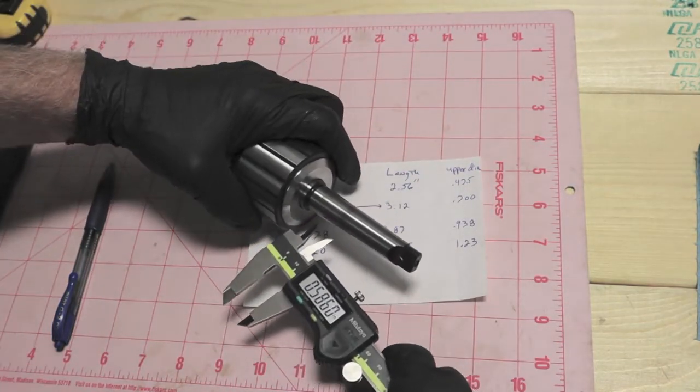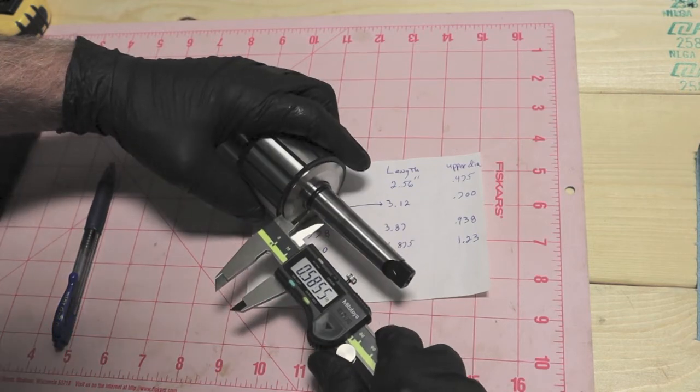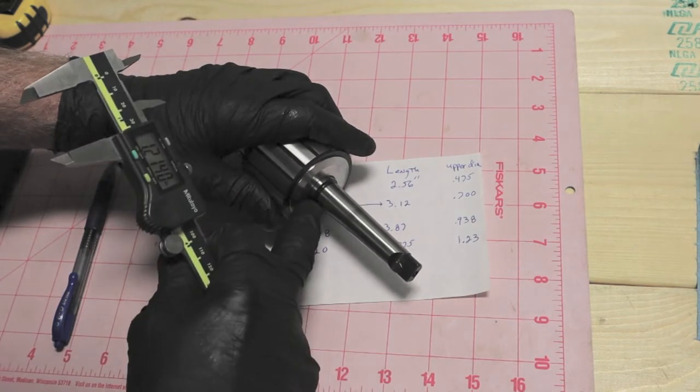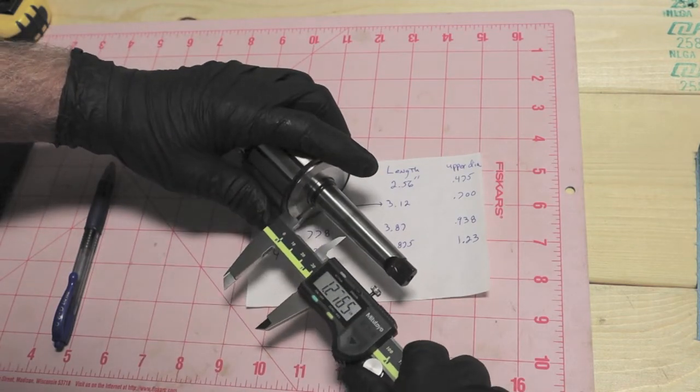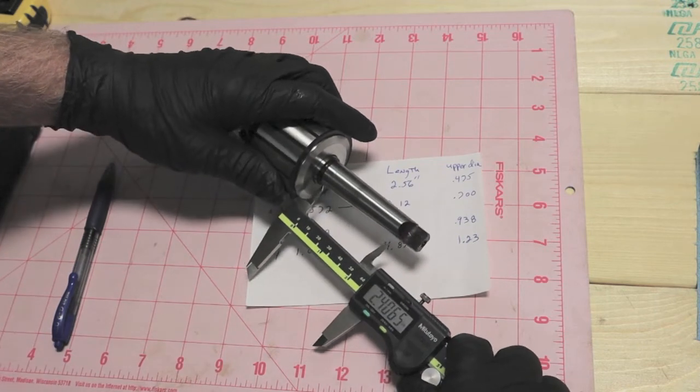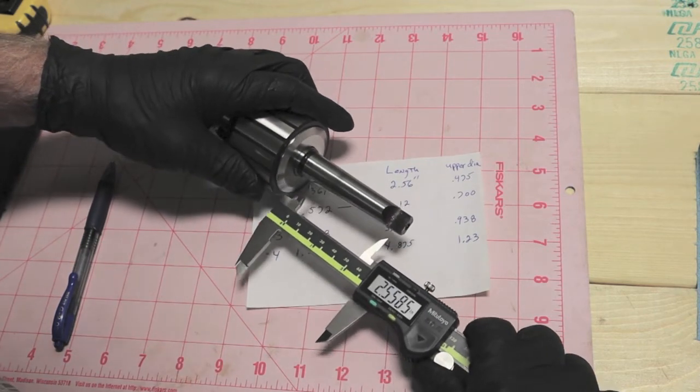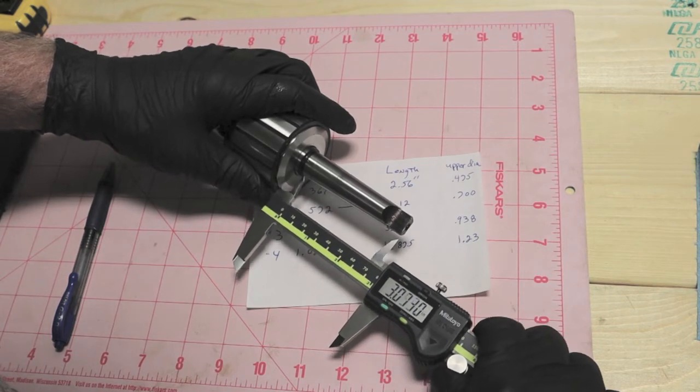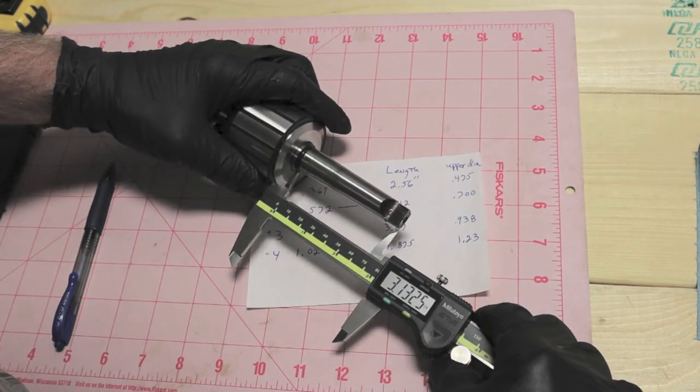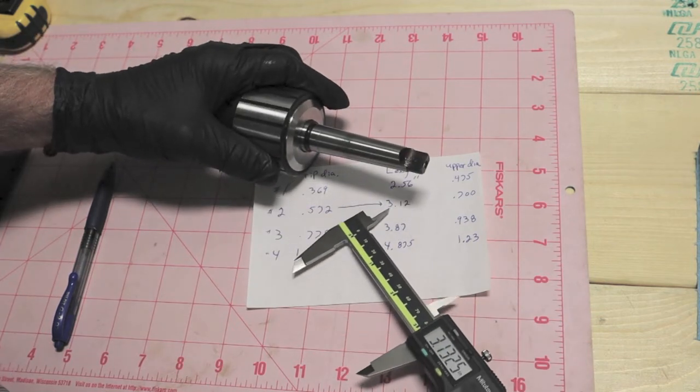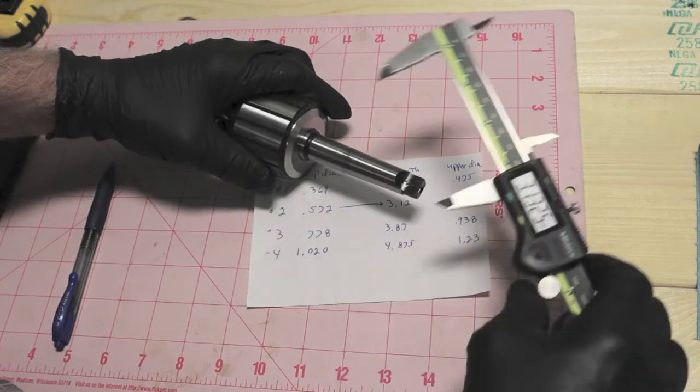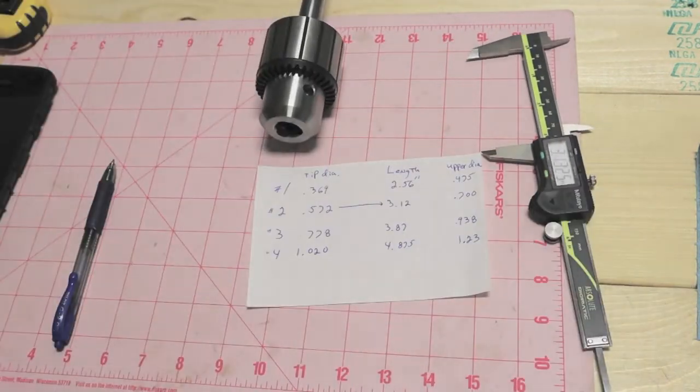And on the length I'm going to go from the top of the step. Now to me this is tricky on exactly where to measure from here so I'm going to go to the top of the step to the very tip of the tang. Three inches and 132 thousandths and I'm supposed to be looking at three inches and 120 thousandths. Instead of 3.12 I'm getting a 3.13. All that is close enough.